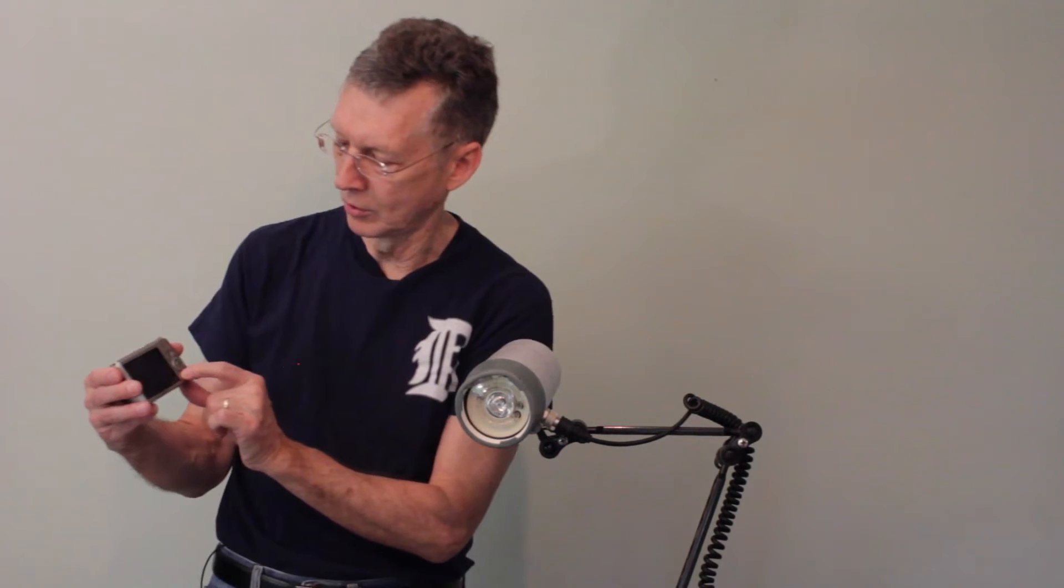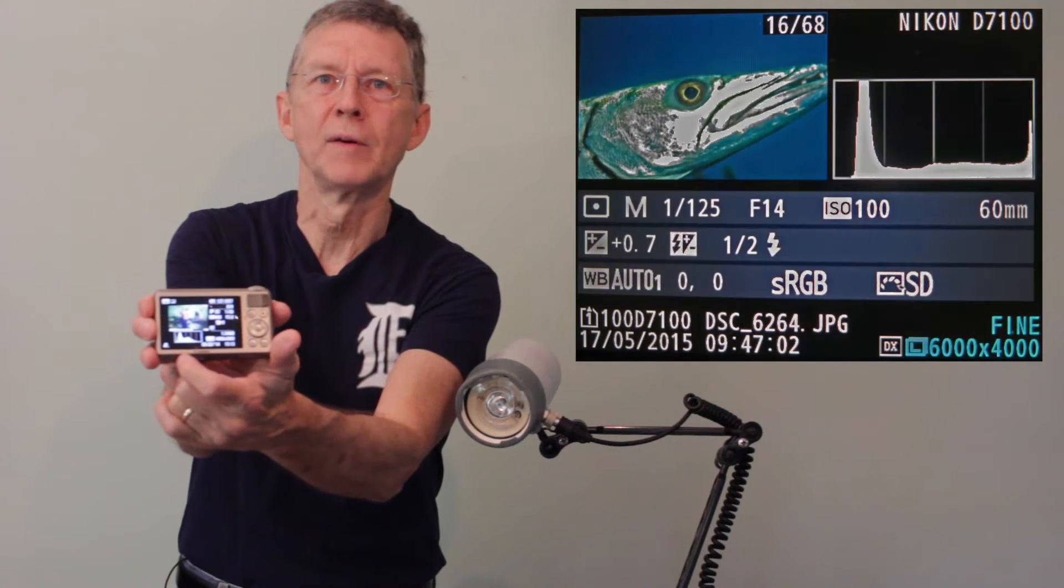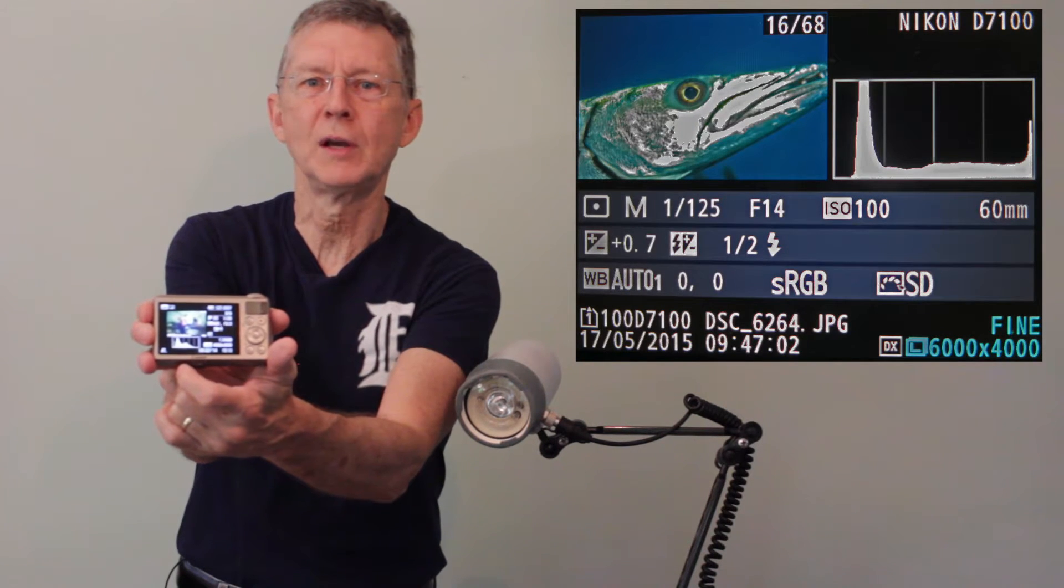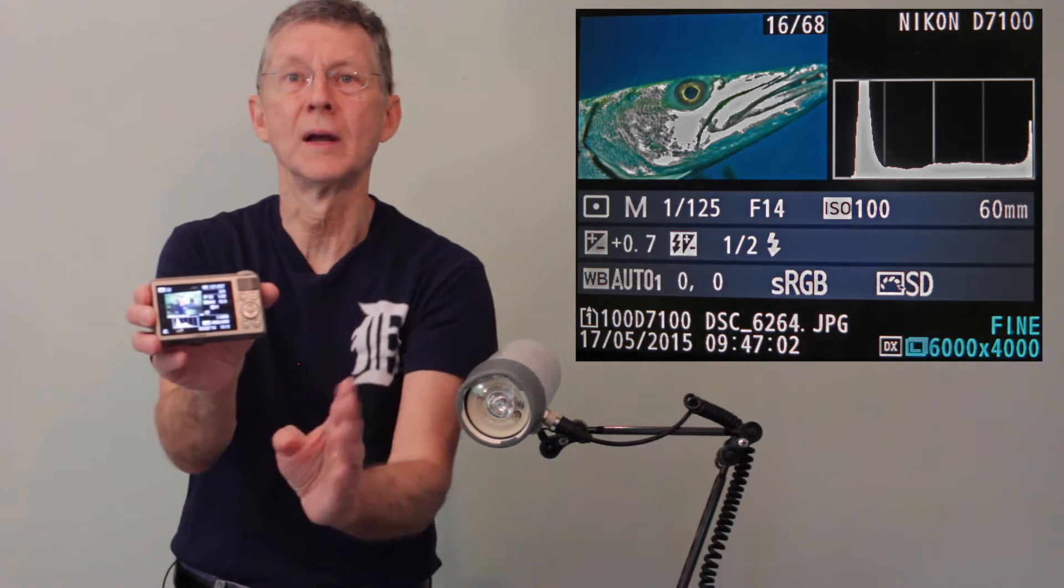Let me show you what the histogram is. You look at your LCD and you show the shot, and it shows this little graph. This is a graphic representation of the tones of color from dark to light, and it lets you see what kind of exposure you had.